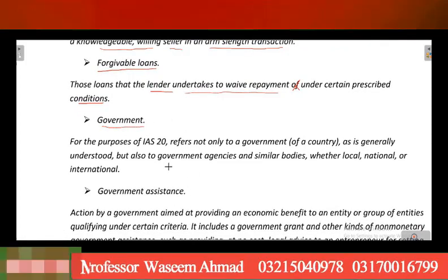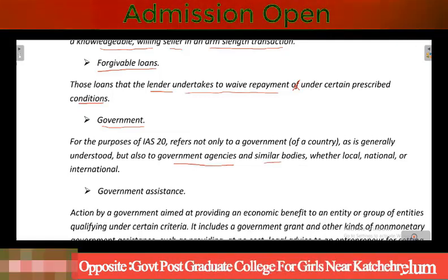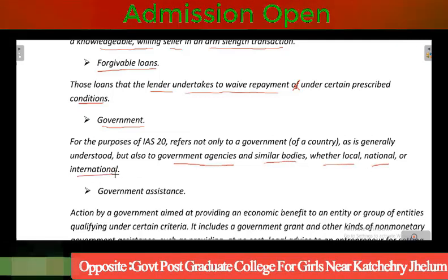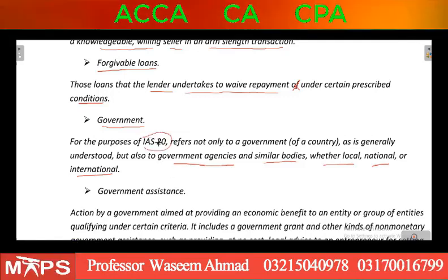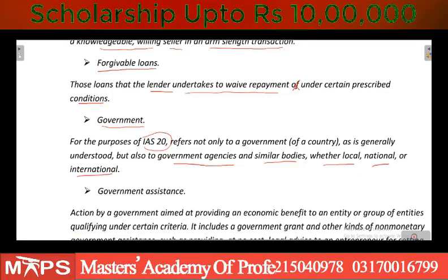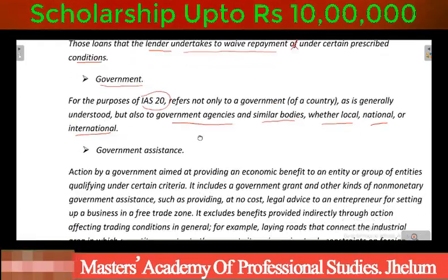Government jo hai woh again aapki federal government bhi ho sakti hai, uske ilawa government agency bhi ho sakti hai, aur similar bodies whether local, national aur international. IAS 20 jo hai woh sirf local government ko nahi dekh raha, federal ko nahi dekh raha — bilke all types ki government ko define kar raha hai.